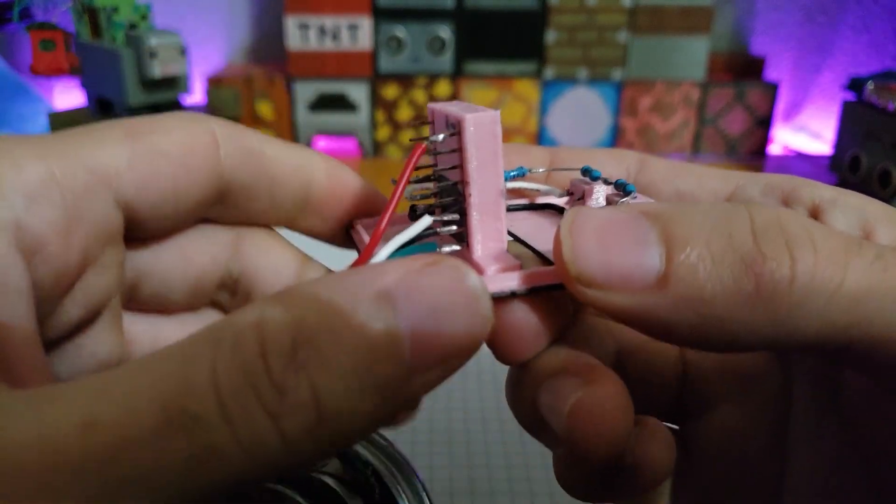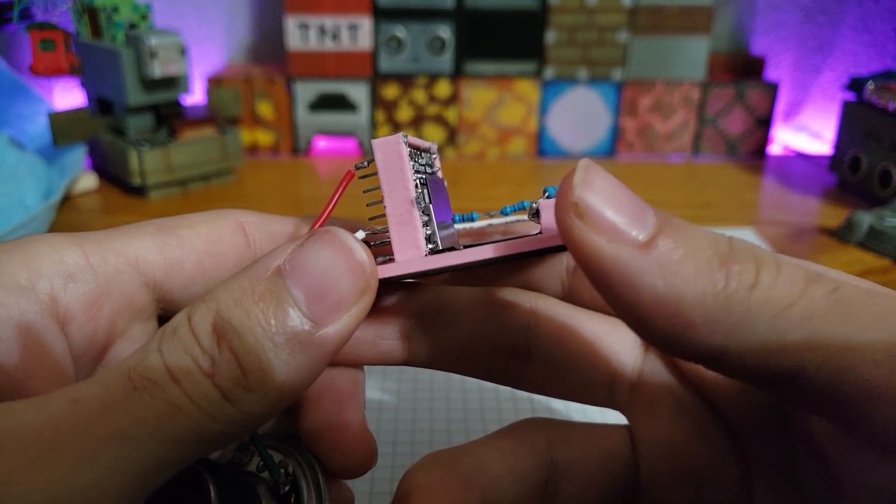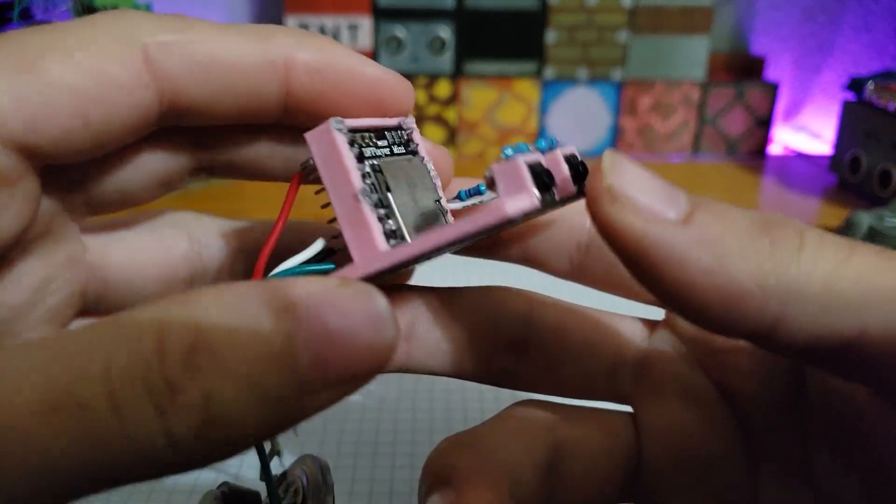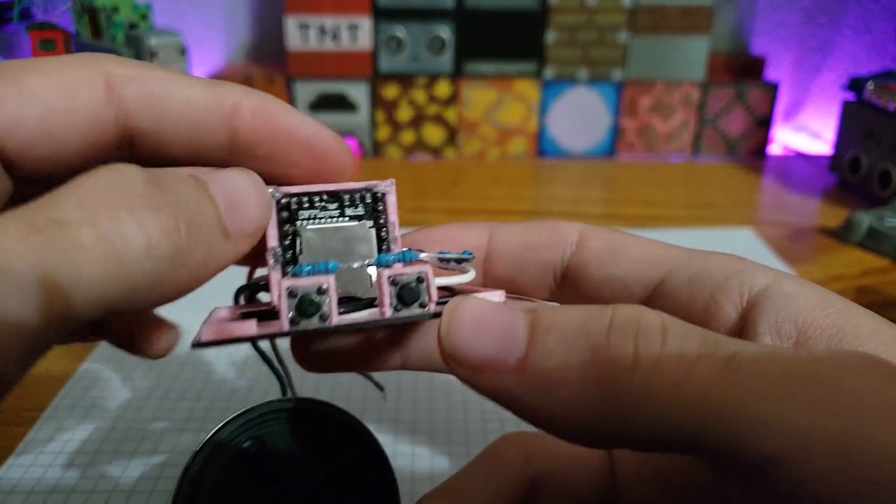Also, I recommend having flux core solder. Finally, the DF player and buttons themselves are pressure fit into the housings. And I've also melted a little spot so that it retains the DF player from moving.